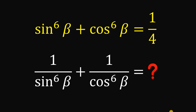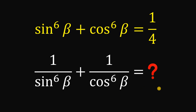Can you solve this trigonometric challenge? Here's the question. Given sine raised to the power of 6 of beta plus cosine raised to the power of 6 of beta equals 1 fourth, then what we're going to do is to evaluate the expression 1 over sine raised to the power of 6 of beta plus 1 over cosine raised to the power of 6 of beta.